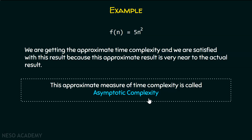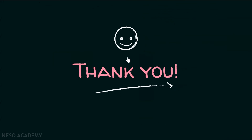We are not calculating the exact running time here. We are eliminating unnecessary terms and concentrating only on the term which takes the most time. This approximate measure of time complexity is called asymptotic complexity. We are not interested in which machine we execute our algorithm on — we are only interested in the approximate measure of time complexity based on the size of the input. Thank you for watching this presentation.